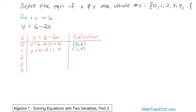When x is equal to 2, y would be 6 minus 2 times 2. 2 times 2 is 4, and 6 minus 4 is equal to 2. So when x is equal to 2, y must also be equal to 2. These are both whole numbers, so we're good. When x is equal to 3, y must be equal to 6 minus 2 times 3, which is 6 minus 6, which is 0. Zero is also a whole number, so the solution is (3, 0). Both are whole numbers.